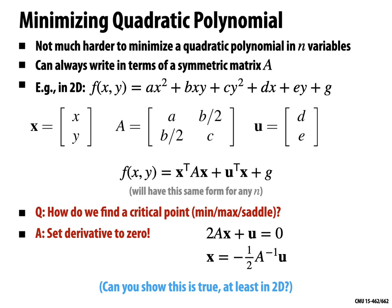Comparing the 1D and multivariate solutions, they are really not so different: in 1D we get x = −B/(2A), and in higher dimensions we get x = −½ A⁻¹u. The one lingering issue is whether the critical point is a minimum, maximum, or saddle. Just like in 1D, this critical point is not always a minimum.